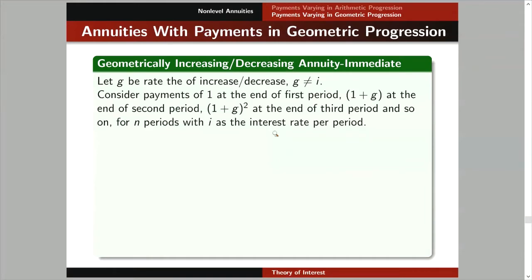Let's consider this series of payments. We have a payment of one unit at the end of the first period. Since g is the rate of increase or decrease, one plus g is the amount payable at the end of the second period, and one plus g squared is payable at the end of the third period. This pattern will continue for n periods.